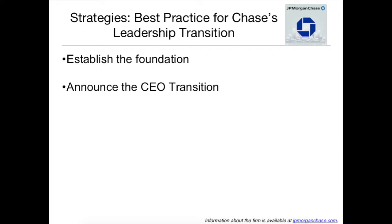The Leadership Transition Strategy is basically divided into two parts. The first one is to establish the foundation, which is the step where the board selects the best candidate for the CEO position. The second part is announcing the CEO transition, which is as important as the first step, because even if the company has the best candidate in the world, not handling the announcement process correctly could have a really negative impact on investors' perspective on the company.